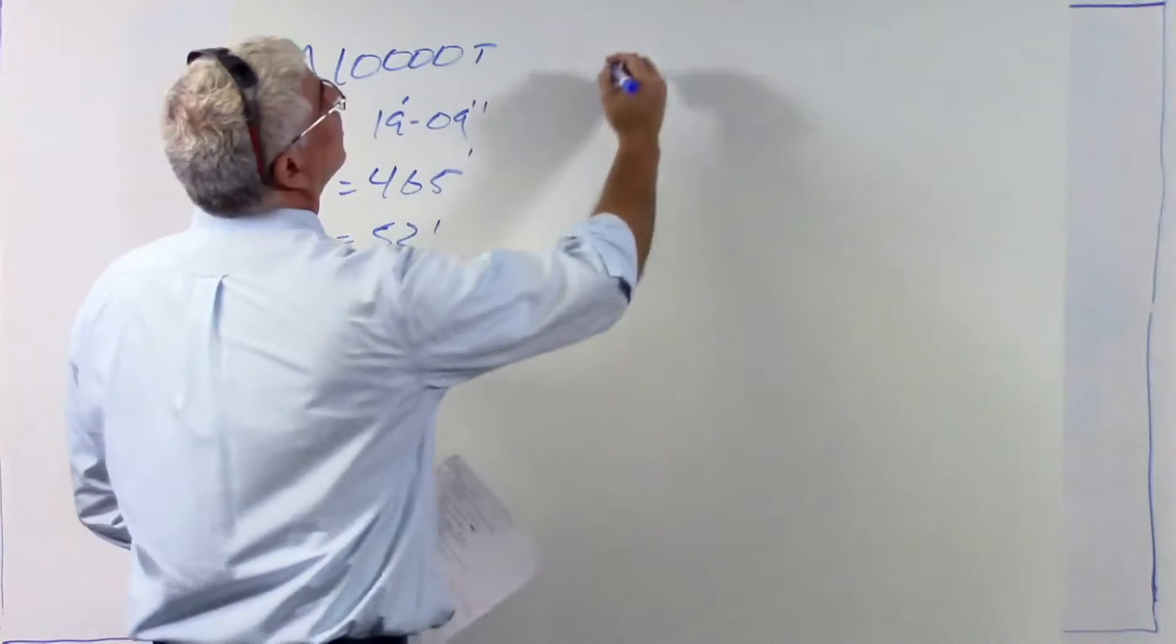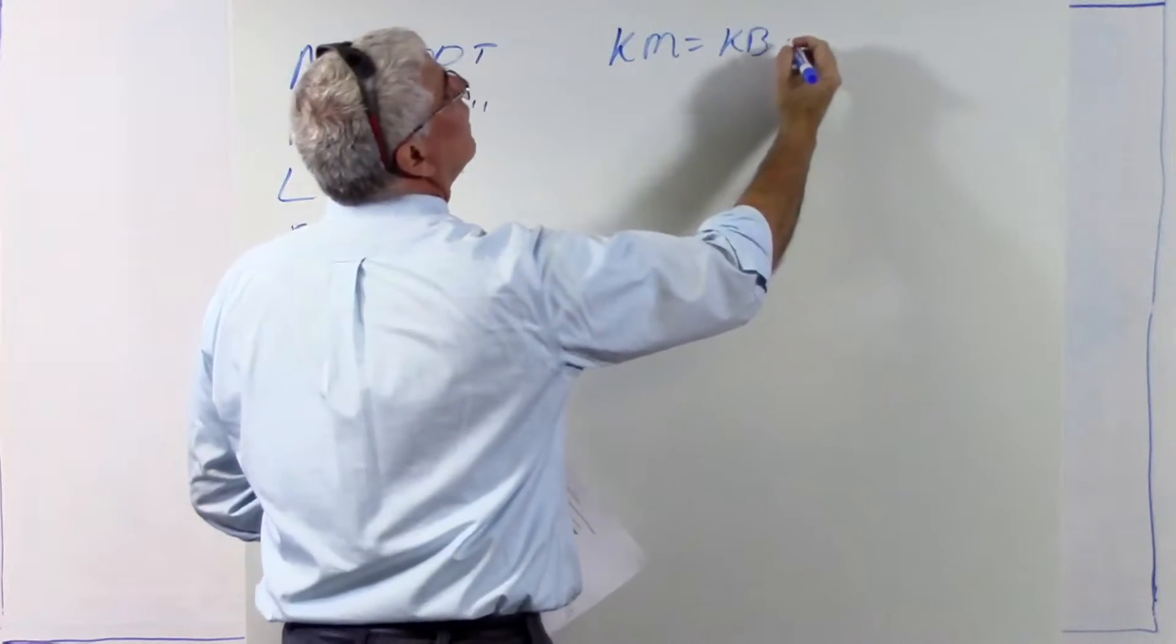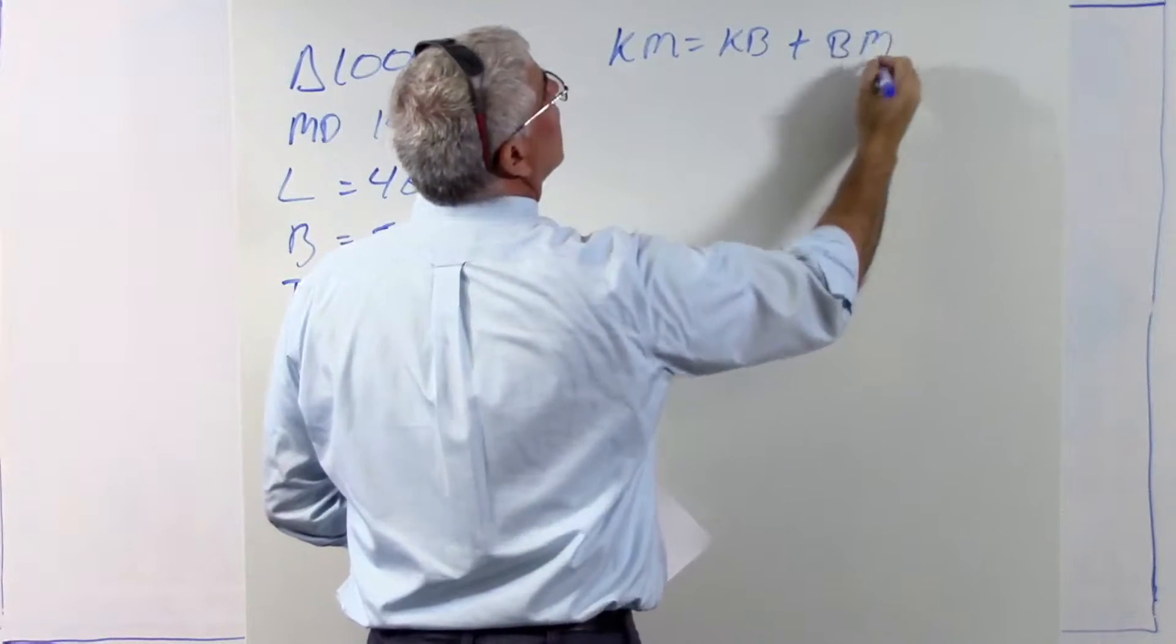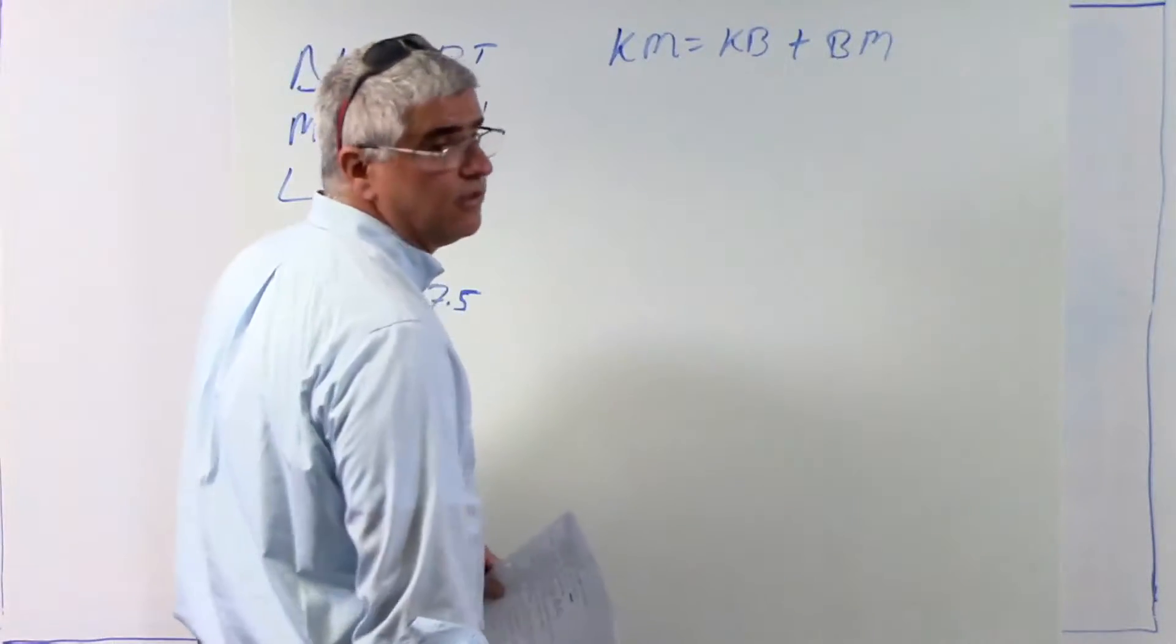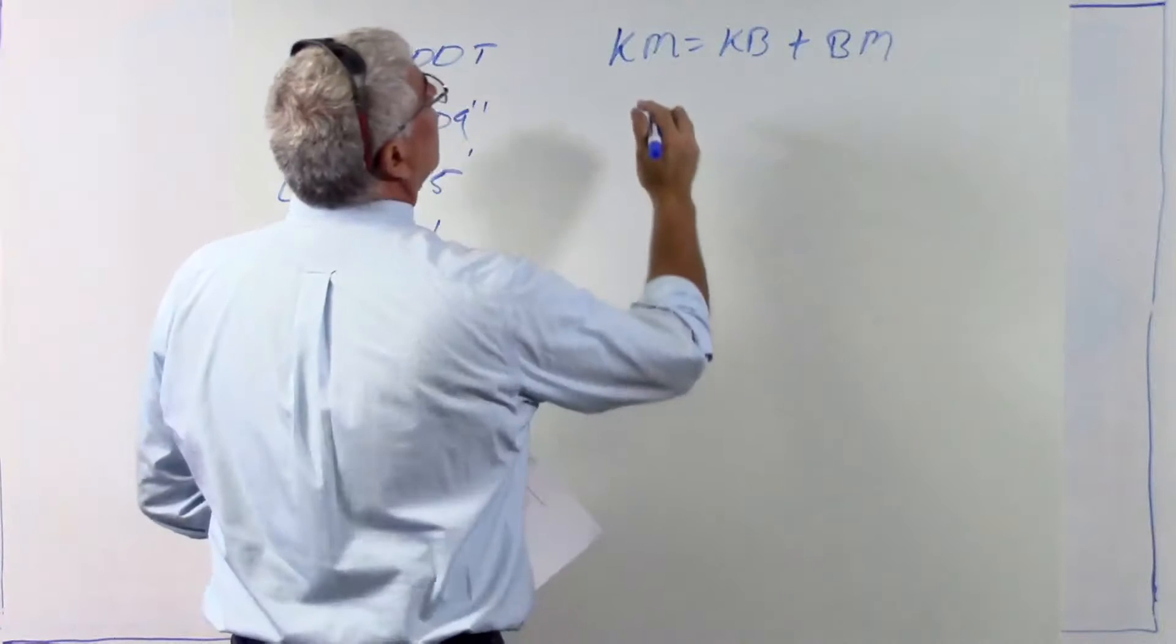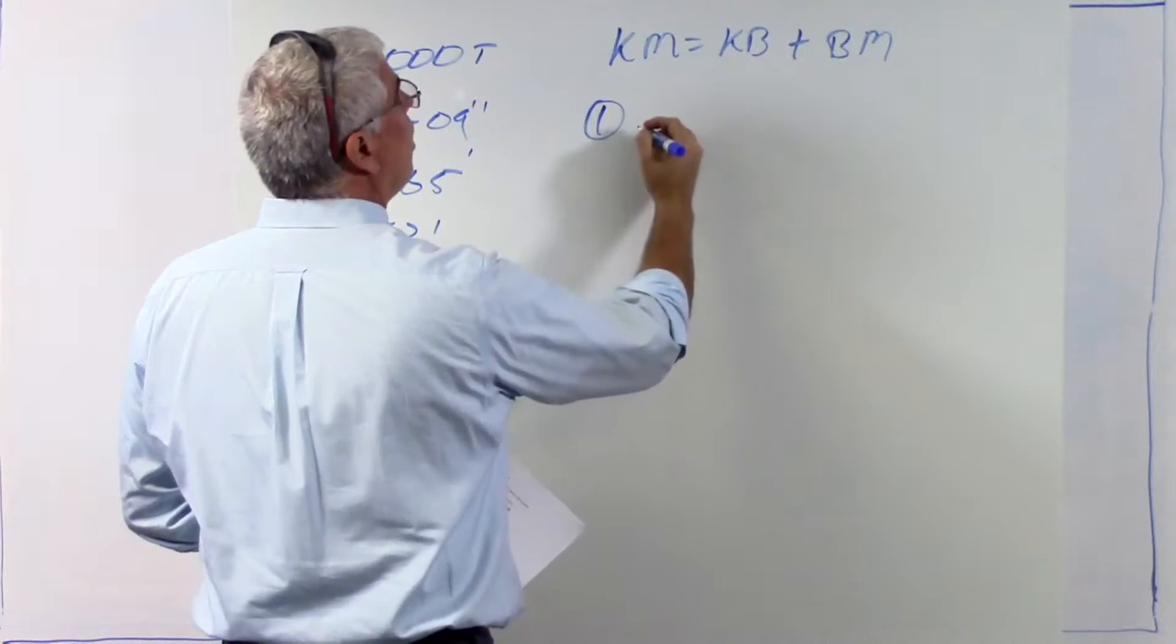So we're going to use this formula. km equals kb plus bm. That's the height of the center of buoyancy, and that's the length of the metacentric radius. So I suggest we do this in five steps.